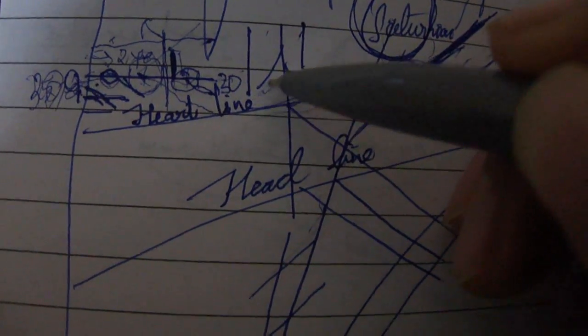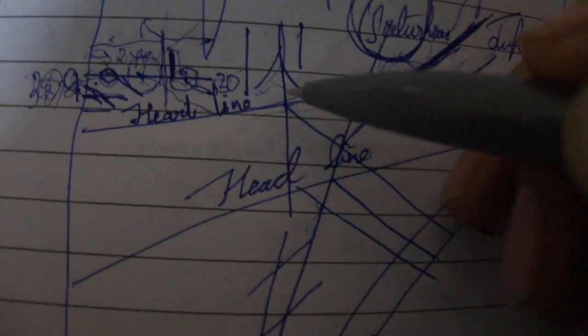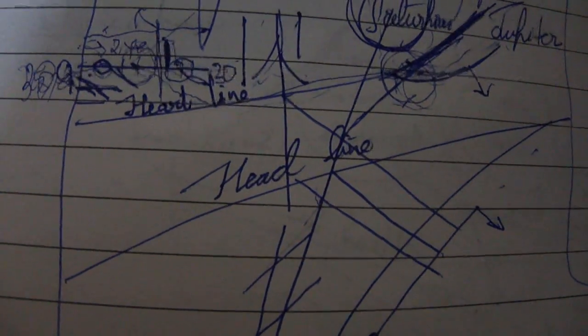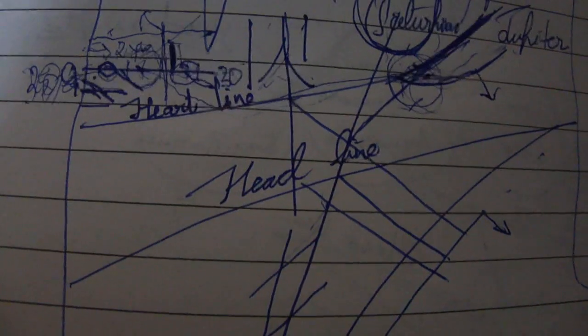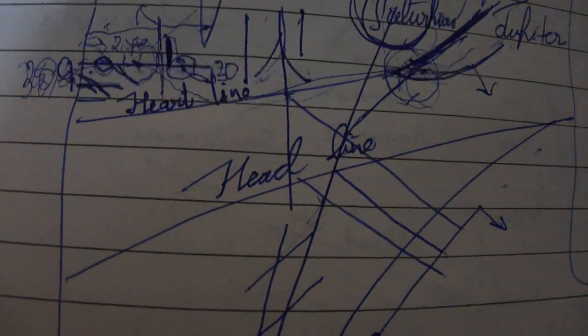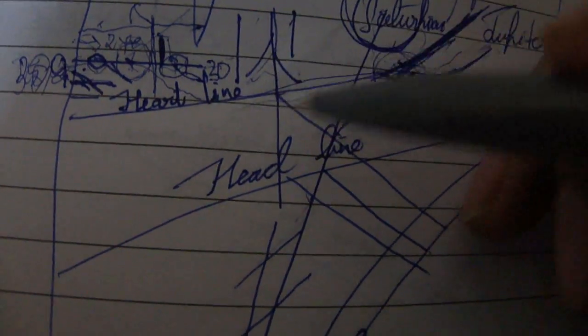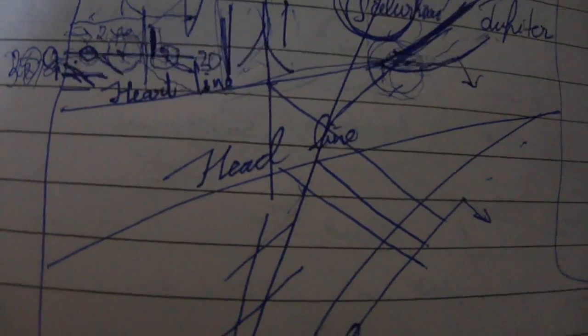If you see a line coming in and joining your sun line from either side, it indicates a good influence that improves the person's status or fame. Lines joining the sun line this way can also be an indicator of a relationship, or can indicate towards legacies or inherited money. Similarly, parallel lines to the sun line can indicate towards a strong and good relationship.